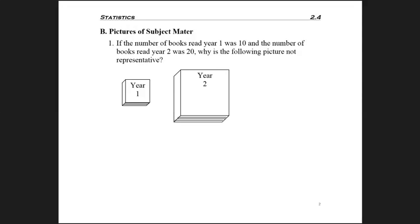The problem here is the picture on the right is not representative. What ends up happening is the height is double the height of number of books you read the first year. But the width is also double, twice as wide. So you have two times two. You actually have four times. So the picture on the right is four times larger than the picture on the left. So it would be as if you read 40 books in your second year.